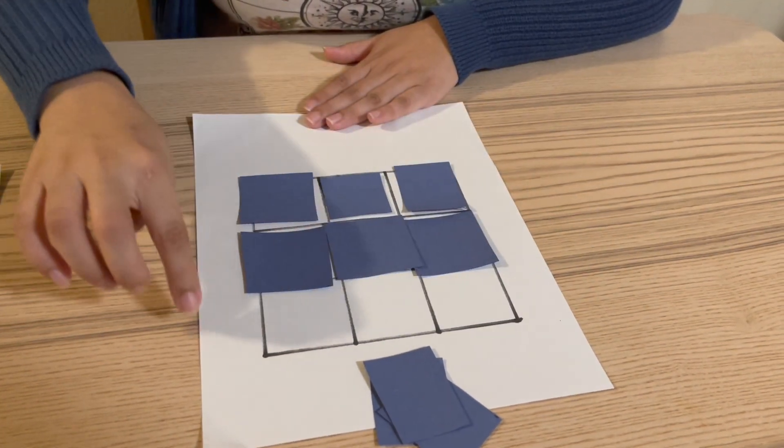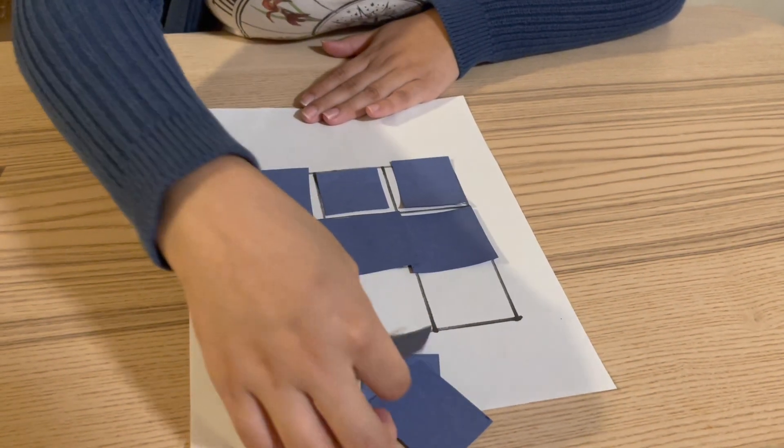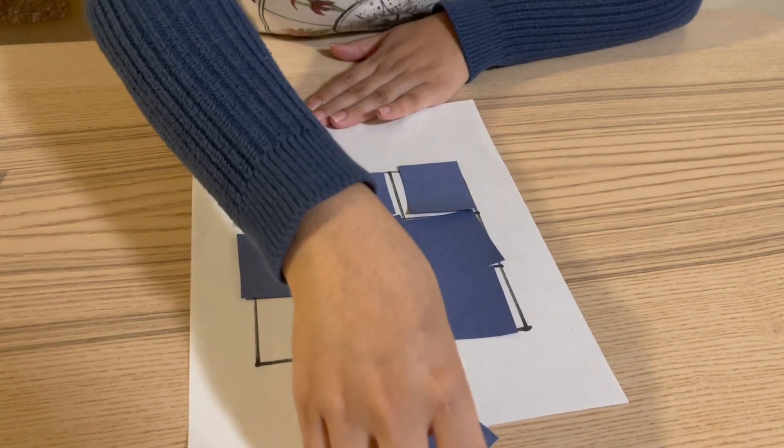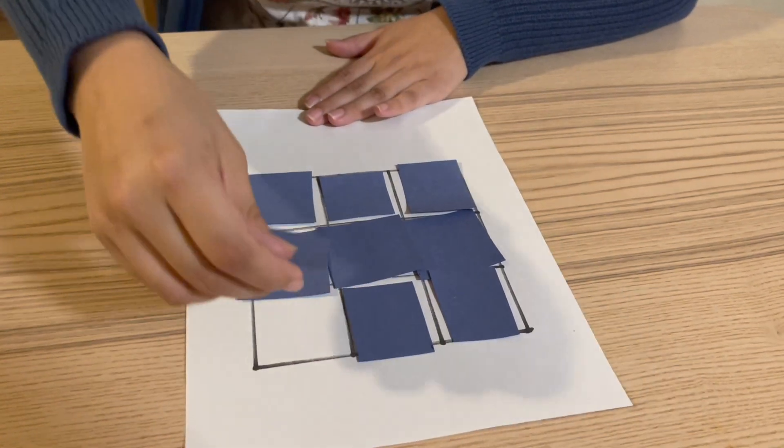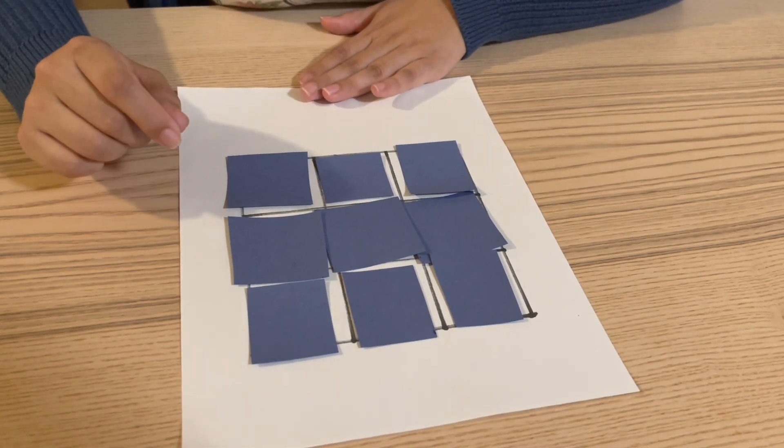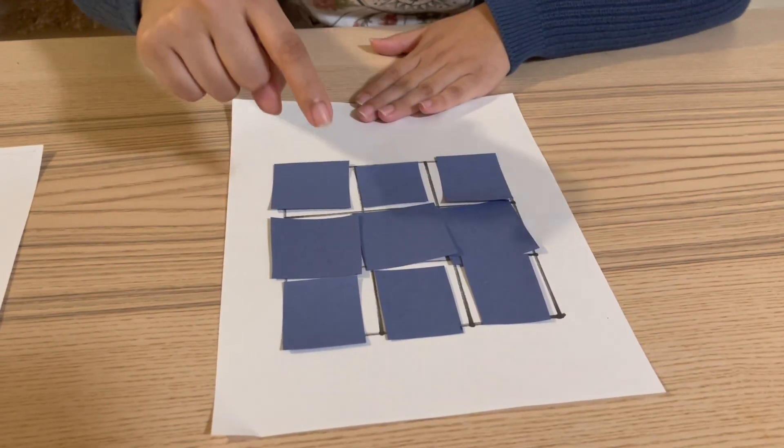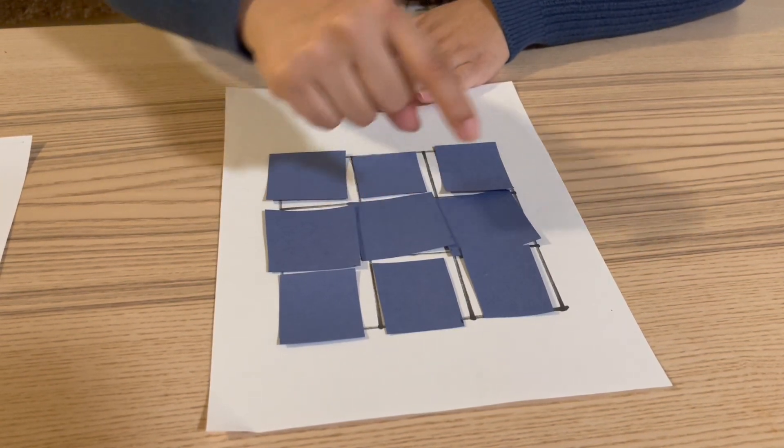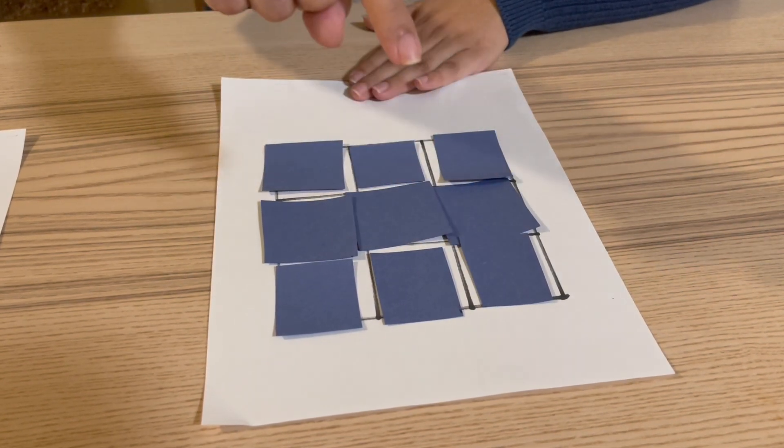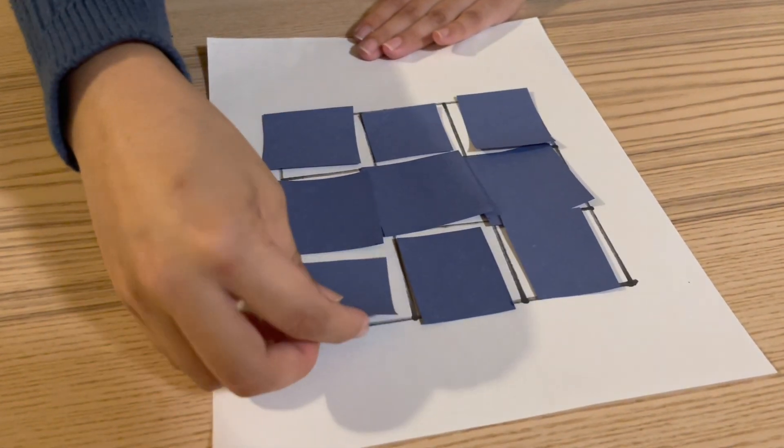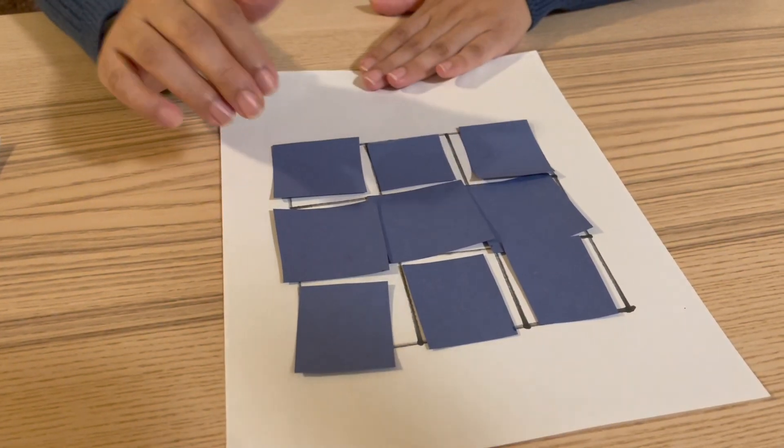For the last row, let's have the student try. Tell them, now you try to fill out the last row and have them put the last pieces. Once we're done, we can say, we did it! We completed the square. Now let's count: one, two, three, four, five, six, seven, eight, nine. It took nine blue squares to fill the big square.